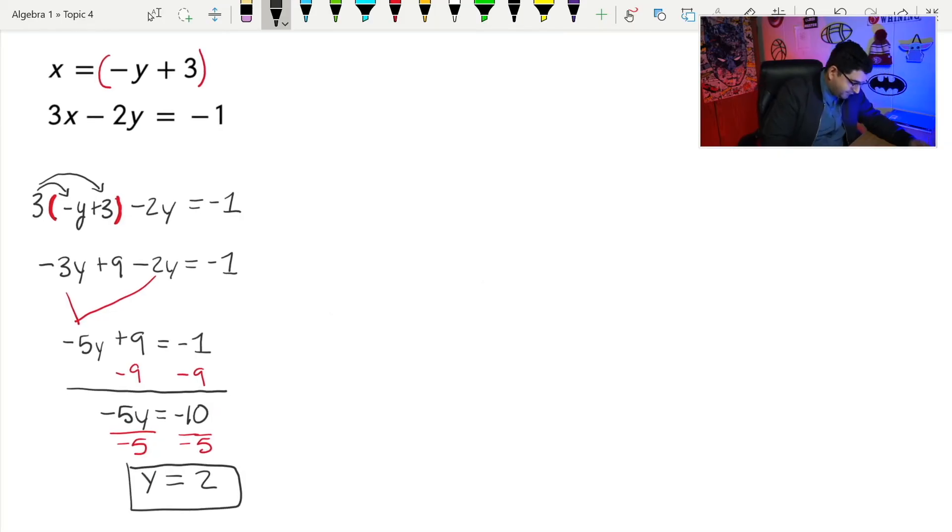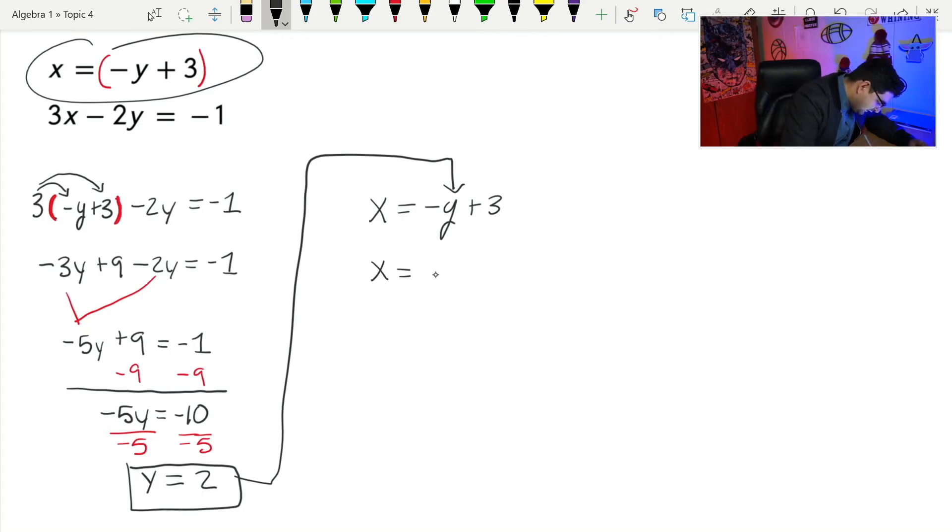So now I know y is two. And we do the same thing as we did last time where now that I know what y is, I'm going to use that to help me find what x should be. So I take this equation on the top, x equals negative y plus three. I'm going to take this guy and plug it in there. So now I'm going to get x equals negative y. I know y is two, so I'm going to plug in two plus three. So negative two plus three, that would be one.